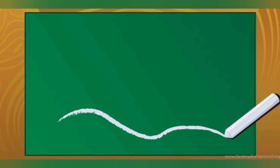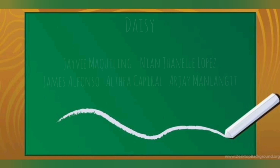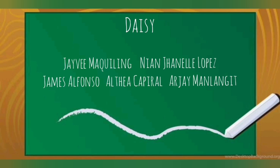This ends our discussion of Quarter 4 Modules 1 and 2. At this point, I would like to acknowledge the diligence of the following students from Carnation: Angelica Caniete, Rain Hoson, Aprilin Dolorosario, David Esiquel, Fajardo Casandra, Kailipan, Jasmine Camua, Patricia Dela Cruz, Mariel Caponpon, Isabel Claro, Fiona Nicole Camua, and Jervyn Sniper. And for Daisy: JV Mackhiling, Nian Jana Lopez, James Alfonso Altea, Capiral, and RJ Manlangit. Keep it up, guys!